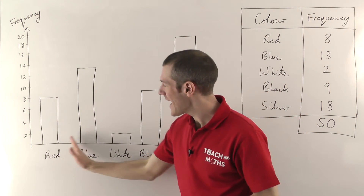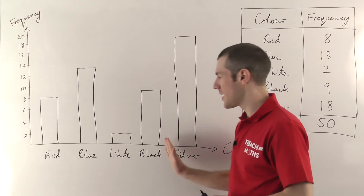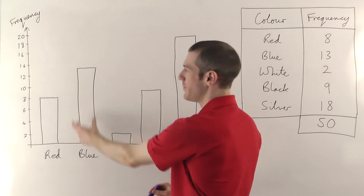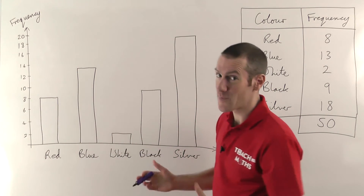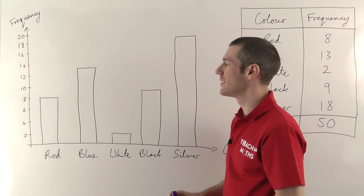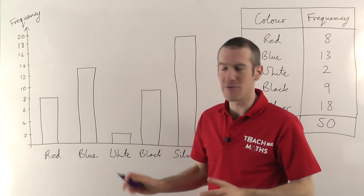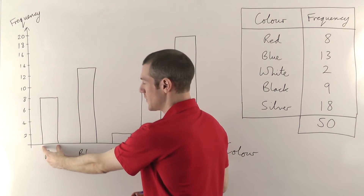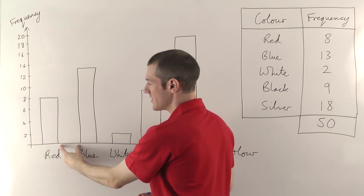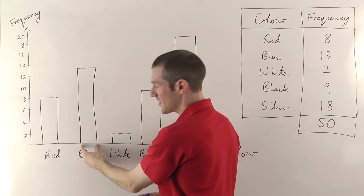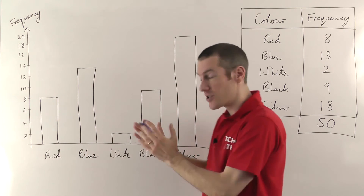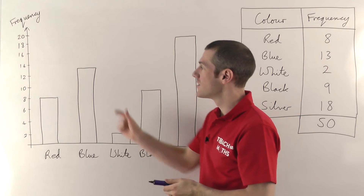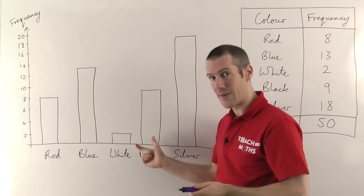A few things to point out: firstly, I've got gaps between the bars, and the gaps should all be the same size. The bars should all be the same width as well. If you're doing it on graph paper, you could do a bar that's one centimeter wide, have a one centimeter gap, and then another one centimeter bar, and so on — spacing them all out evenly so the bars are all the same width.